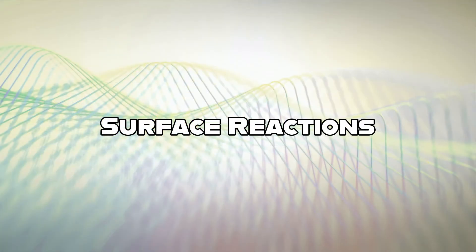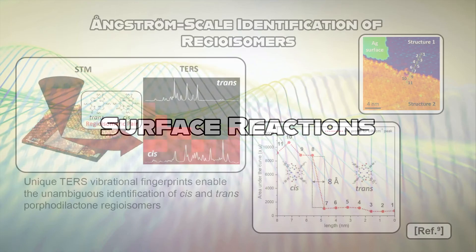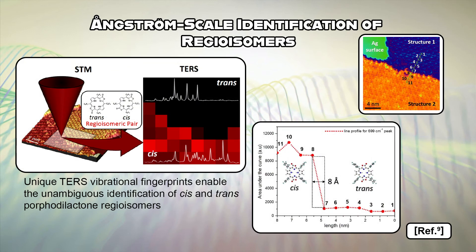Moving beyond molecule-substrate and intermolecular interactions, we have used UHV-STM TERS to study surface reactions. Due to its ability to distinguish chemical identity, even in the case of adjacent regioisomers as we showed in this study of positional isomers of porphodilactone molecules on silver-100, it was possible to identify cis- and trans-regioisomers with 8-angstrom resolution, making UHV-STM TERS an ideal method to consider the effects of local chemical environments on surface-bound reactions.